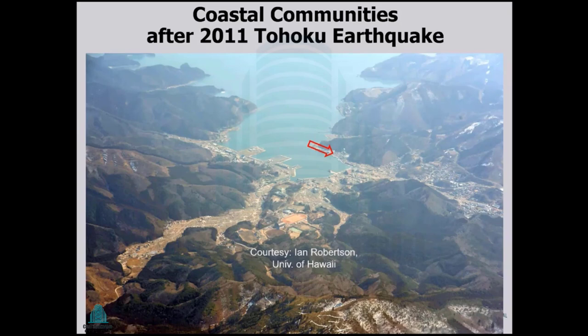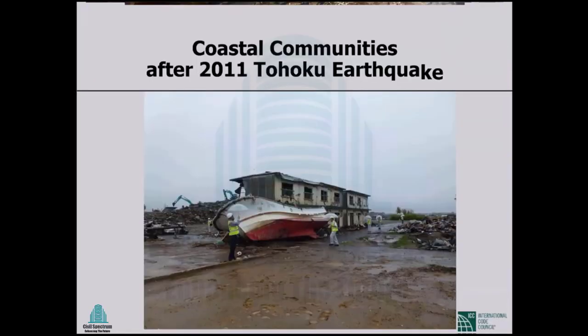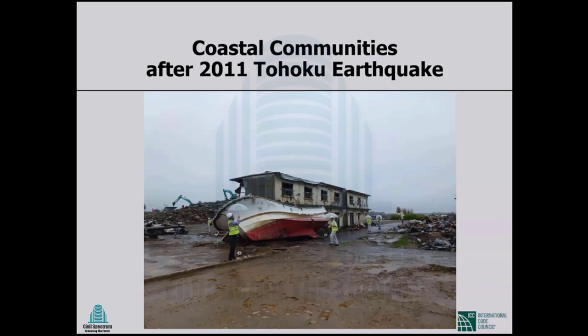The problem in this earthquake was not the earthquake itself, but the tsunami that was generated by it. This is the coastline — the village of Wanagawa within the coastal area. This is what you saw: the vivid result of the tsunami, which totally wiped out entire communities. This was a very typical scene.